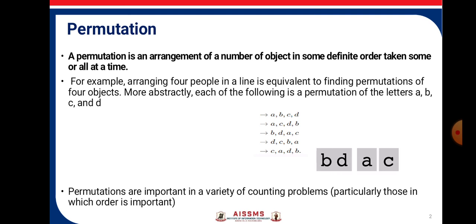Permutation. A permutation is an arrangement of a number of objects in some definite order taken some or all at a time. For example, arranging four people in a line is equivalent to finding permutations of four objects. More abstractly, each of the following is a permutation of the letters A, B, C and D.